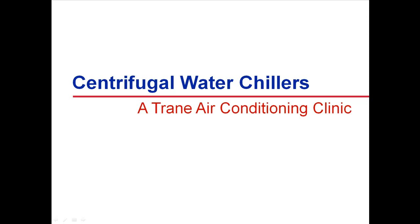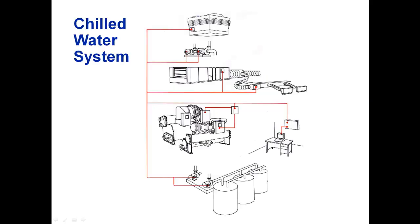Good day guys. This particular clinic introduces the concept of centrifugal water chillers and the major components. Water chillers are used in a variety of air conditioning and process cooling applications. They are used to make cold water that can be transported throughout a facility using pumps and pipes. This cold water can be passed through the coils to cool the air in an air conditioning application, or it can provide cooling for a manufacturing or industrial process. Systems that employ water chillers are commonly called chilled water systems.